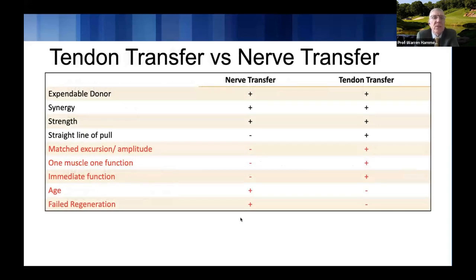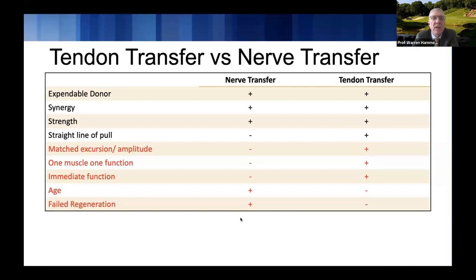When comparing tendon transfers versus nerve transfers, expendable donor, synergy, and adequate strength are important for both. A straight line of pull is really more important for a tendon transfer — nerve transfers want somewhat supple, tension-free coaptation. Matched excursion and amplitude is critical for tendon transfers but not a consideration for nerve transfers. One muscle, one function is important for tendon transfers but less so for nerve transfers.